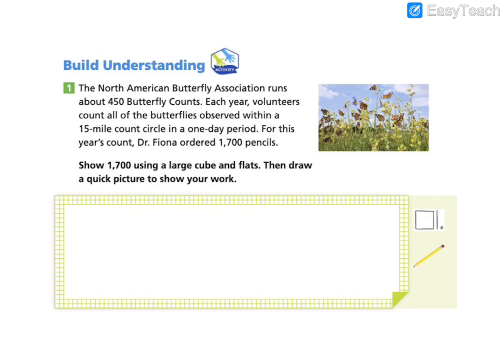We need to show 1,700 using a large cube and flats. Then draw a quick picture to show your work. So if you have hundreds blocks with you, you can go ahead and get those out. If not, we can use a picture to represent. So I'm going to take a look at this number, 1,700. I'm going to go ahead and write this in expanded form. 1,700 is equal to 1,000 plus 700.